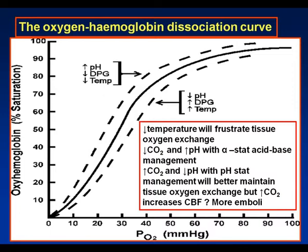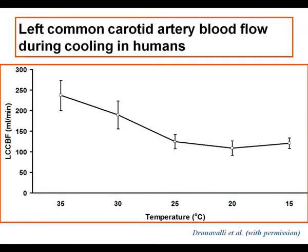We've been doing some studies in which we've been instrumenting patients with jugular bulb catheters, a left common carotid flow probe, and various monitoring devices. This is some cumulative data from this project. We can see that in patients of about 70 kilograms, they start at 35 degrees centigrade with left common carotid blood flow of roughly 250 mils per minute. By 25 degrees centigrade, this blood flow has halved.